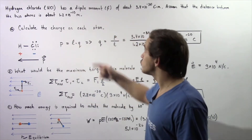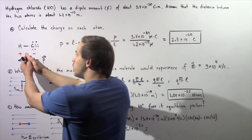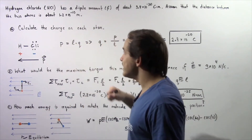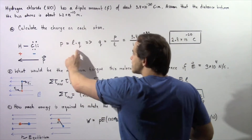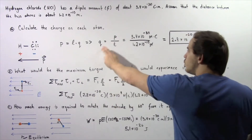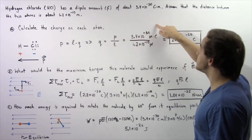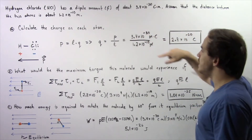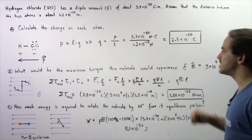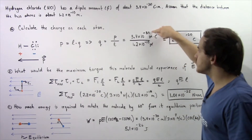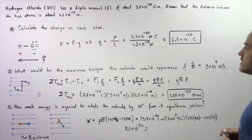The electric dipole moment P is equal to the product of the charge and the distance between those two charges. We know the distance and the electric dipole moment, so we solve for Q. Q equals P divided by L, where P is 3.4 times 10 to the negative 30 coulomb-meters divided by L, which is 1.2 times 10 to the negative 10 meters. The meters cancel, giving an electric charge of 2.8 times 10 to the negative 20 coulombs.